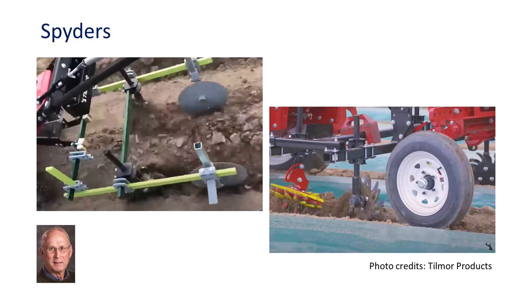Spiders loosen soil and dislodge weeds near the row. The tool is ground-driven with offset teeth mounted on a hub. A spider has jagged teeth that can throw soil toward the crop row to bury weeds, or be set to pull soil away from the row. They work in pairs and can be adjusted inward or outward depending on the crop's growth stage. Spiders are versatile tools that can work alone or ahead of in-row weeding tools such as S-tine finger weeders, or form beds on the edge of plastic ground cover.